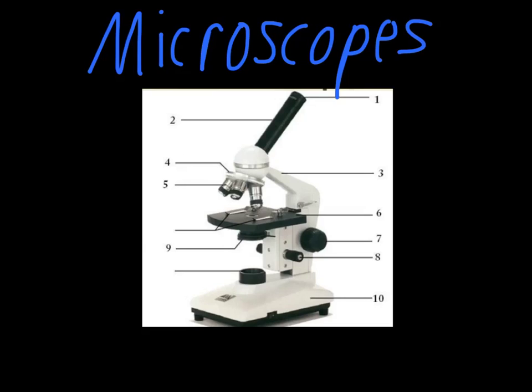The purpose of this video is to explain the parts and functions of a microscope. The very first part we're going to talk about is the ocular lens up here at the top. This is also referred to as the eyepiece. For the microscopes that we have in class, this gives you ten times magnification.